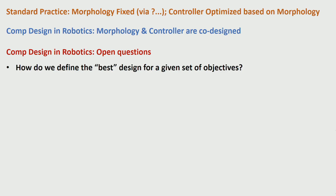What I'm hinting at is that as roboticists move beyond the standard practice of positing morphology and then optimizing that particular morphology, and instead co-design those two things — co-designing the morphology and the controller — that, at least for me and hopefully for the robotics community, leads to a couple of questions.